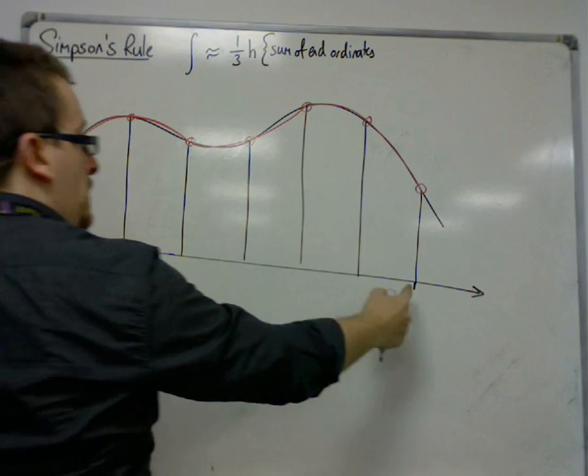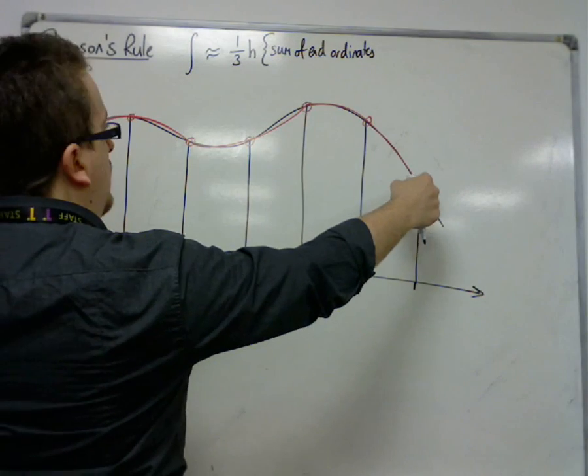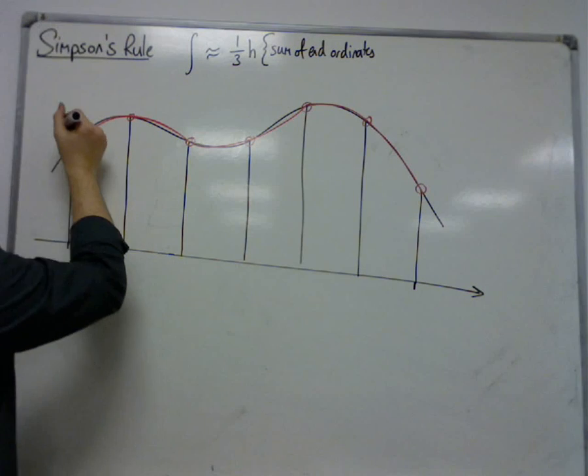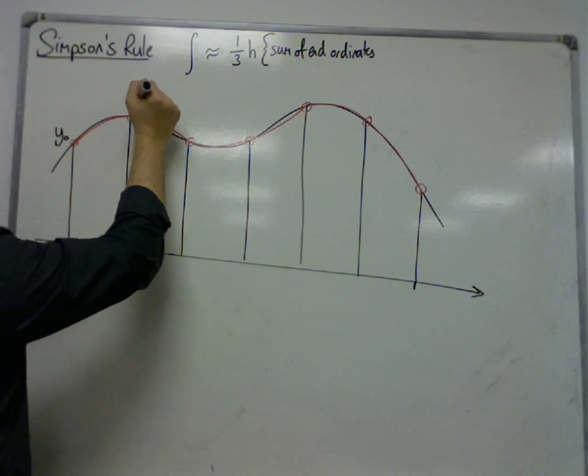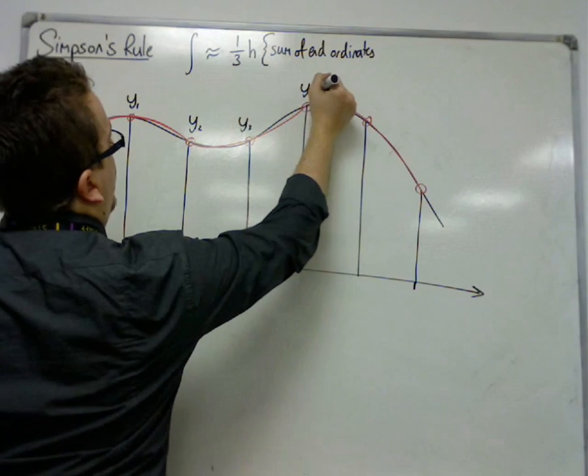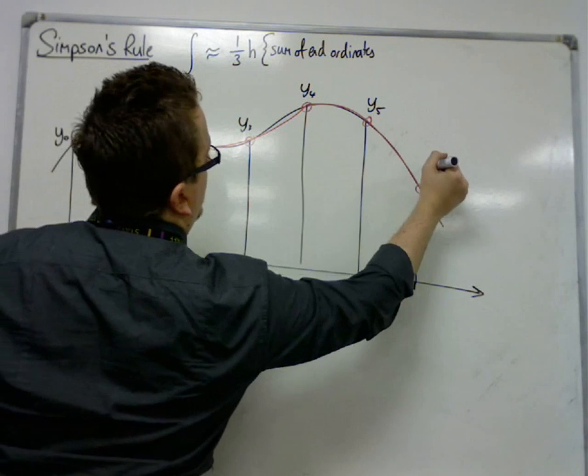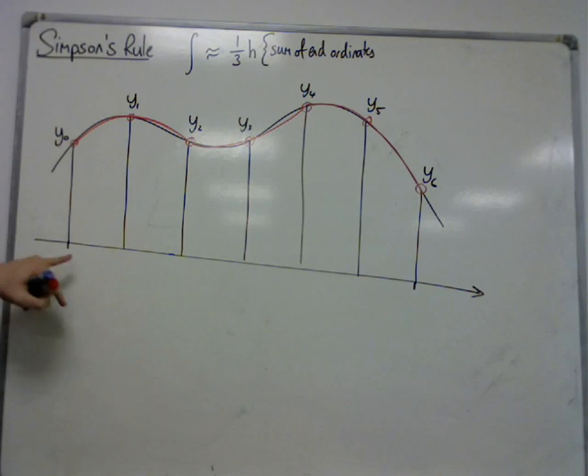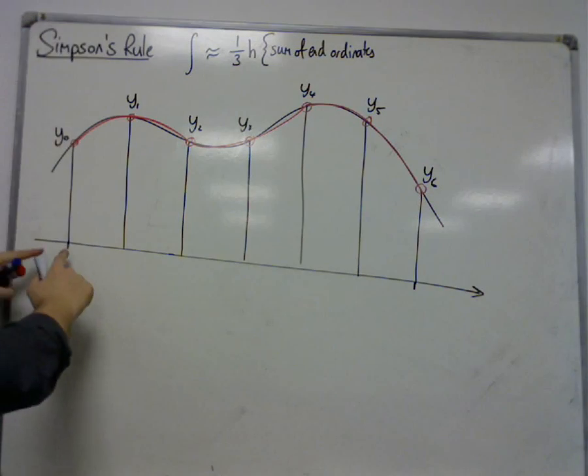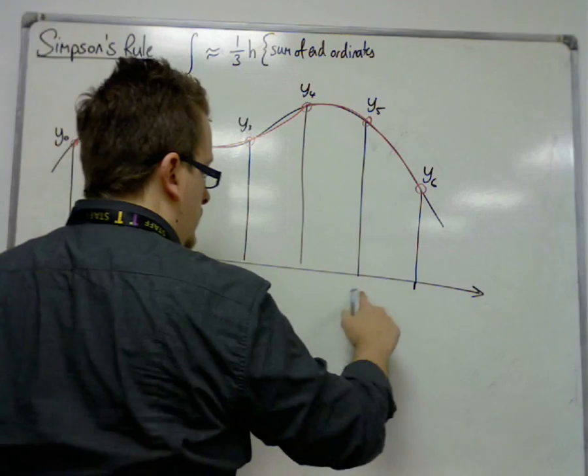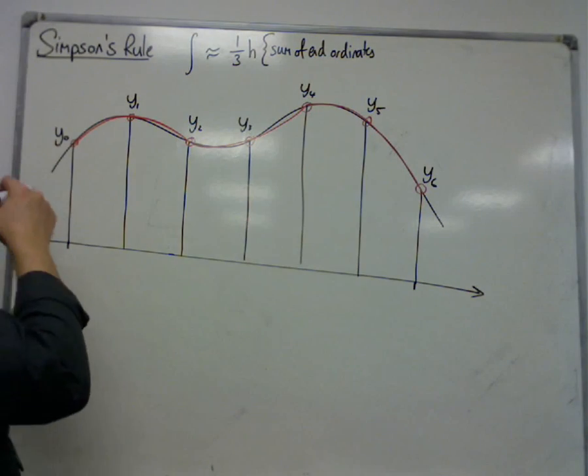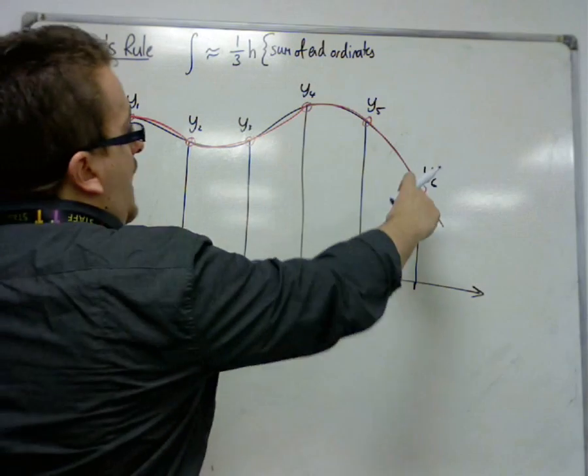So the integral is approximately equal to one-third of H times by the sum of the end ordinates. So this one plus this one, that one plus that one, because this was Y0, Y1, Y2, Y3, Y4, Y5, and Y6. So that is Y0 plus Y6. These are your X ordinates, these are your Y ordinates. So it's the sum of the end ordinates, the first one and the last one.